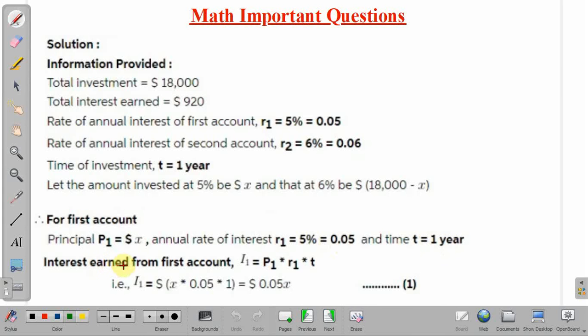We can calculate interest earned from the first account. It will be I1 and it equals P1 times R1 times T. Substituting the values we get I1 equal to X times 0.05 times 1 year. So, it will be 0.05X dollars.